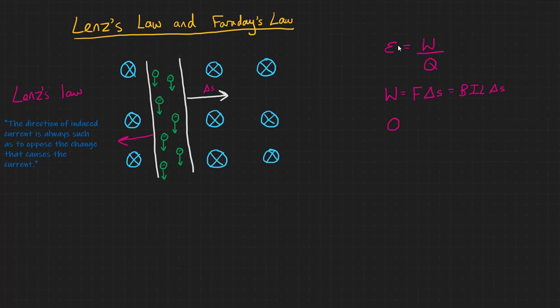And the charge here is the induced current flow, I, multiplied by the time over which that current is flowing, delta T. So we can put all this together to get EMF is equal to BIL delta S, divided by I delta T. So our equation can be simplified again to B delta A, the change in the area, divided by delta T.